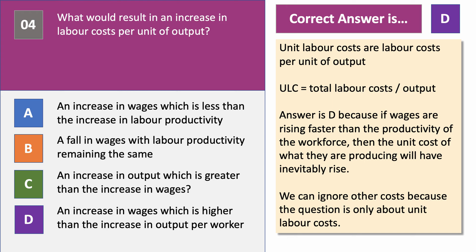Unit labor costs are labor costs per unit of output, determined by total labor cost divided by output. The answer is D because if wages are rising more quickly than productivity, you're paying workers a lot more relative to how productive they've been, so unit labor costs will have gone up. Option A — an increase in wages less than the increase in productivity — would bring down unit labor costs. A fall in wages with productivity unchanged also reduces unit labor costs. And an increase in output greater than the increase in wages would also reduce unit labor costs.